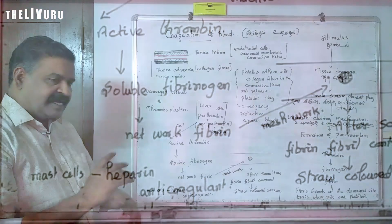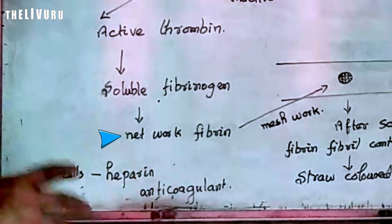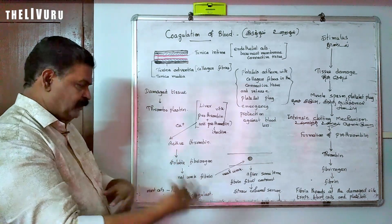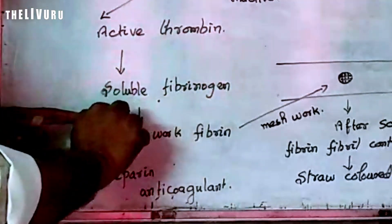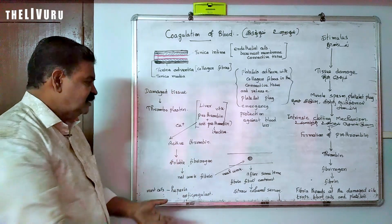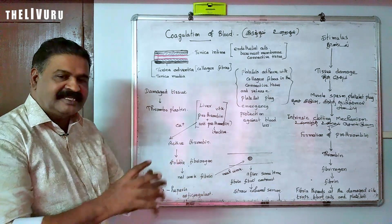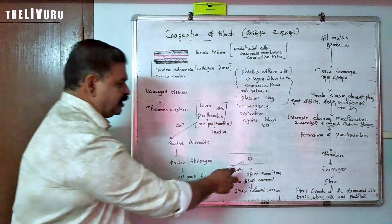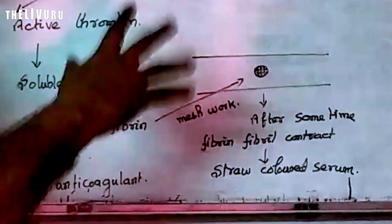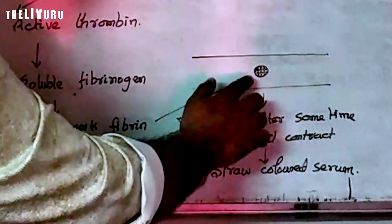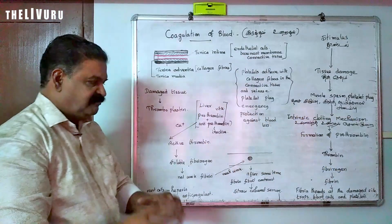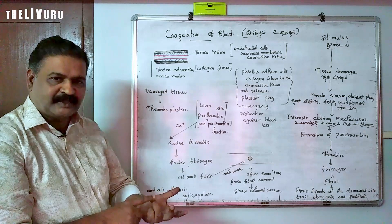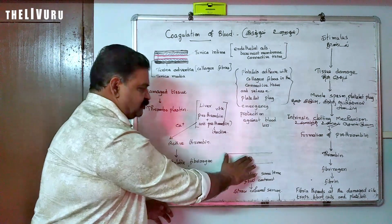Active thrombin then converts soluble fibrinogen into a network-like fibrin. This fibrin network is adhesive and forms a mesh. In between the meshes of this fibrin network, platelets and other blood substances become entangled, thus forming the blood clot.